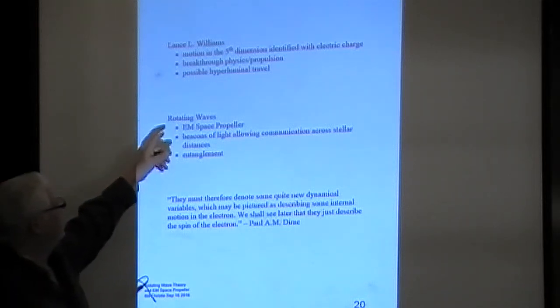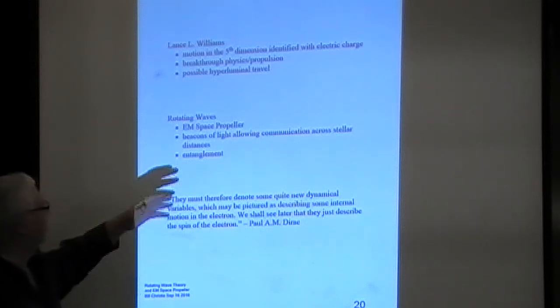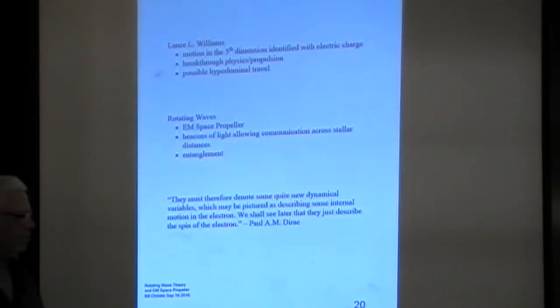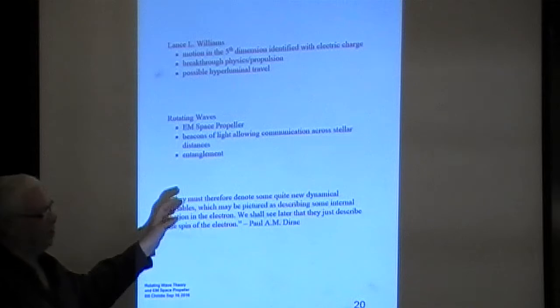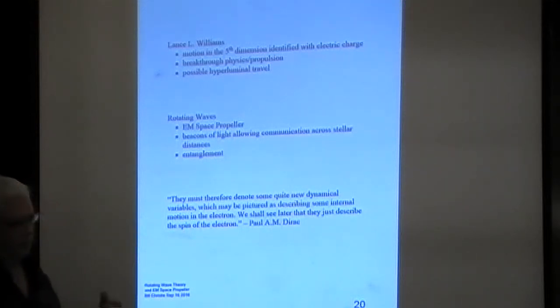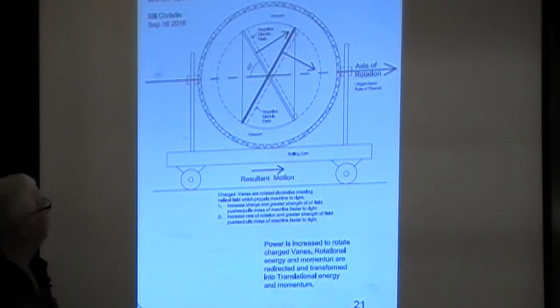Rotating waves could be EM space propeller, beacons of light allowing communication across stellar distances. Because of course the rotating wave has to go faster than the speed of light at a certain radius, so we get superluminal, luminal, and subluminal, but it's going out on a straight line. Paul M. Dirac actually kind of hinted at things, de Broglie certainly did. But what it's saying is space and time are not connected—it's more from the rotation of a wave.